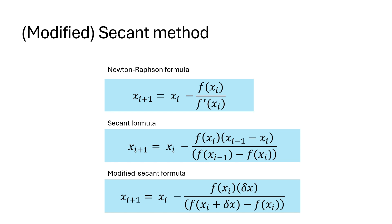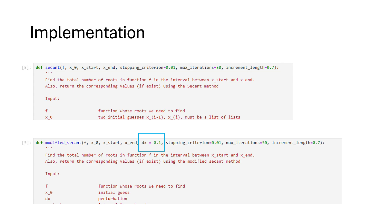Now let's see how we implement these two methods in Python. Let's look at the function calls for the secant and modified secant methods. The secant method requires the two initial guesses whereas the modified secant requires a single guess and a perturbation parameter.